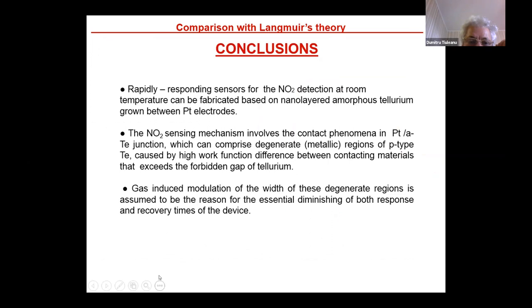Conclusions. Properly response sensor for NO2 detection at room temperature can be fabricated based on nanolayer amorphous tellurium grown between platinum electrodes. The NO2 sensing mechanism involves both the contact phenomena from tellurium junction, which can comprise a degenerate metallic p+ type tellurium caused by the high work function difference between contact materials that exceeds the forbidden gap of tellurium. Gas-induced modulation on the width of this degenerate region is assumed to be the reason for this essential diminishing of both response and recovery times of the device.